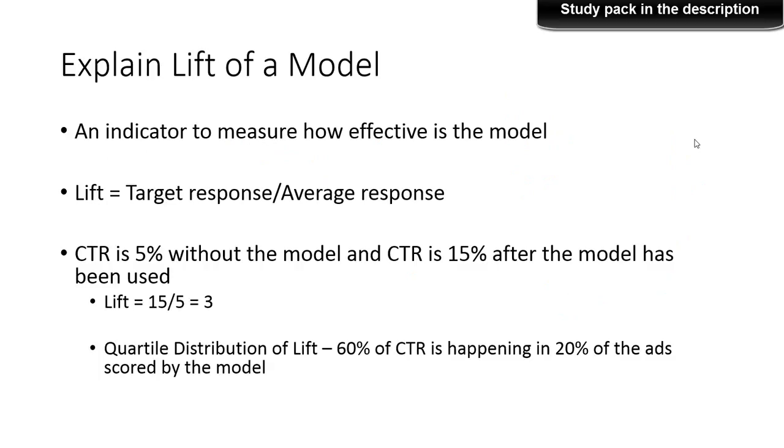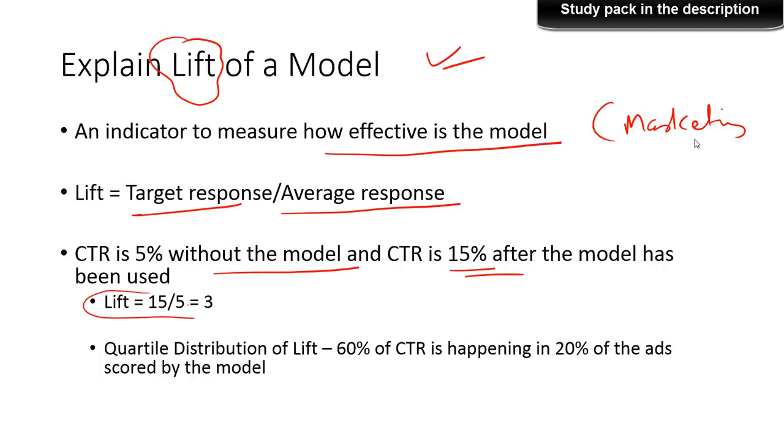Explain what is the LIFT of a model. So LIFT is an indicator to measure how effective the model. And often in marketing analytics, in credit risk analytics, LIFT is a very commonly used matrix used to evaluate model performance in the productions. And LIFT is given by target response divided by the average response. So for instance, let's say that the model has been built for a click-through rate of ads. So the CTR is 5% without the model. And CTR is 15% after the model has been in use. Then the LIFT would be just 15 by 5, which is 3. Always simple to calculate.